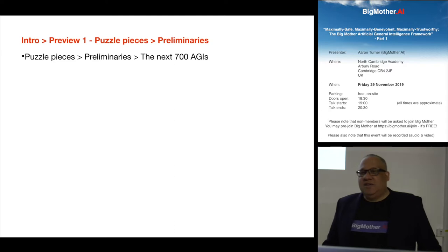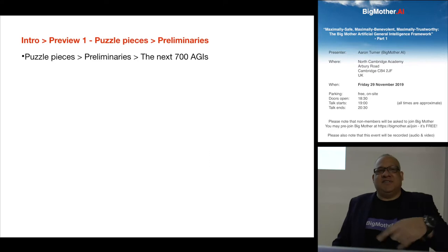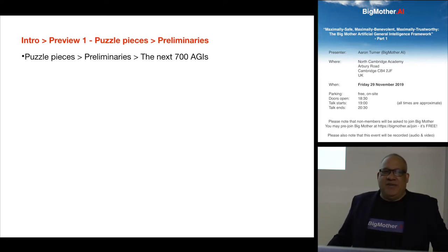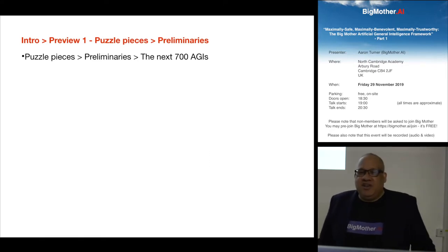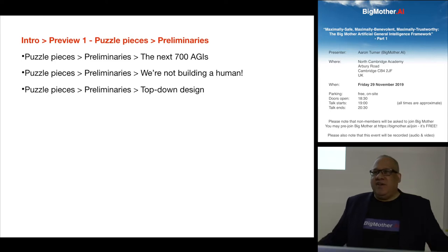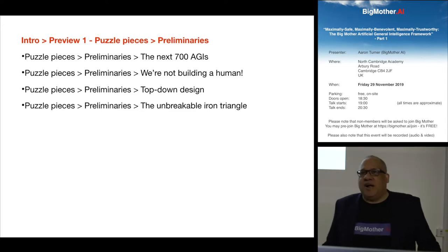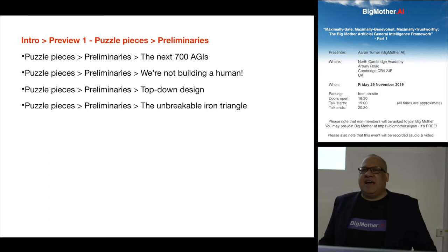There's a very famous computer science paper called 'The Next 700 Programming Languages' — it's a play on that. We are not building a human; there's already a mechanism for that. I'll describe the top-down design process — how you actually build from an engineering perspective something this complex. I'll also describe something called the unbreakable iron triangle, which is a tension between quality, functionality, and cost.